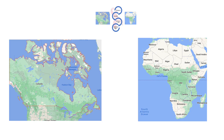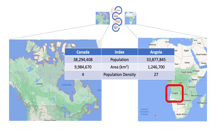Let's explore why there may be some differences in mortality and incidences of breast cancer in different parts of the world by performing a head-to-head comparison of two countries. We'll compare Canada and a country in Africa, Angola, which has roughly the same population, a different area, and a different population density.